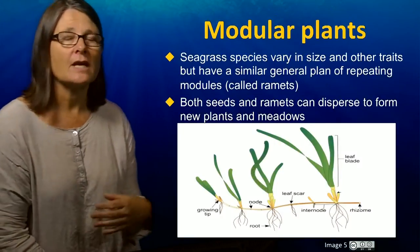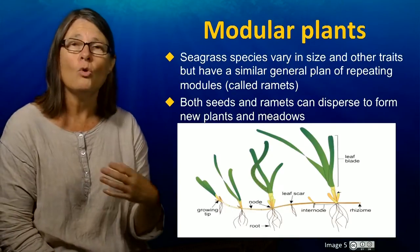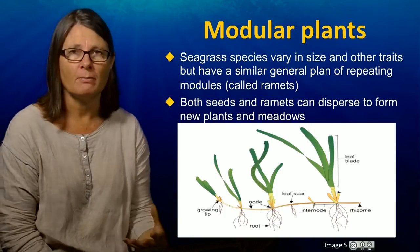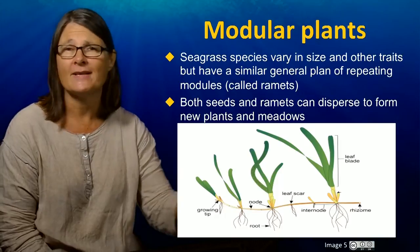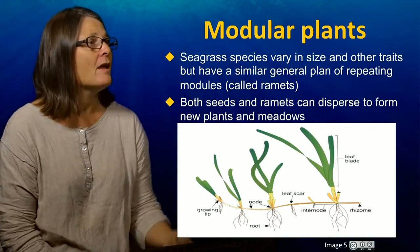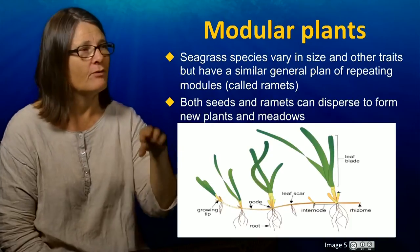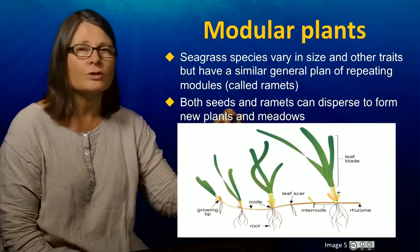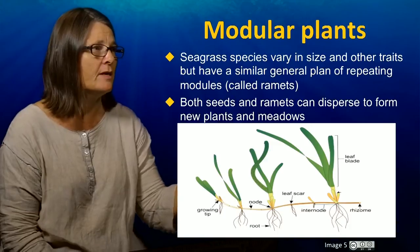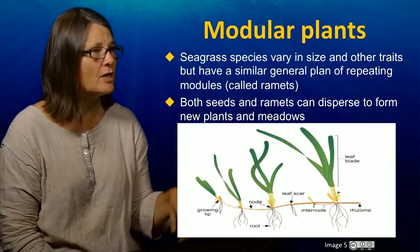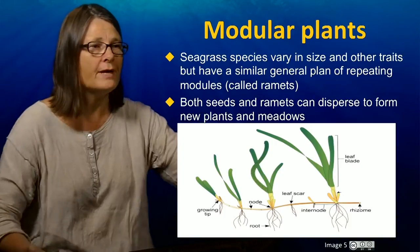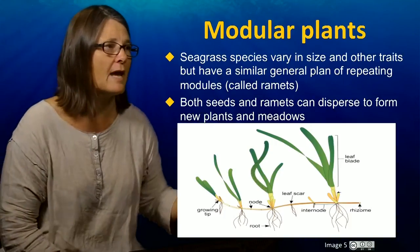Now seagrasses, even though they're very different in size, all have a very common plan. They are modular plants, a little bit like the lawn that you might see in front of a building or your house. They have modules that are made up of leaves, rhizome - which is a word that means underground stem - and roots that are rooted into the sediment. You can see that they actually grow from the tip, and they can fill a whole meadow by growing along through this underground stem.